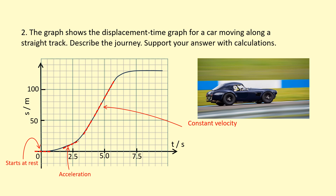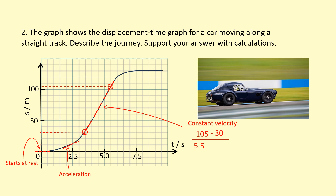Let's calculate the velocity on that straight section. Using y2 minus y1 over x2 minus x1: y2 is around 105 meters at a time of 5.5 seconds, and the earlier point is around 30 meters at 3.5 seconds. That gives a speed of 37.5 meters per second. This is the fastest section of the journey because it's the steepest point on the graph.